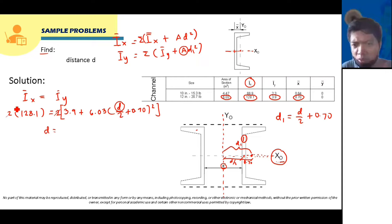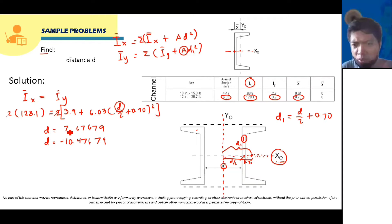Input this in your calculator. There will be two values since we have d squared — one positive and one negative. The negative answer is approximately negative 10.477. The positive answer is 7.677 inches. Choose the logical one, which is the positive answer. Don't forget the unit: the answer is d equals 7.677 inches.